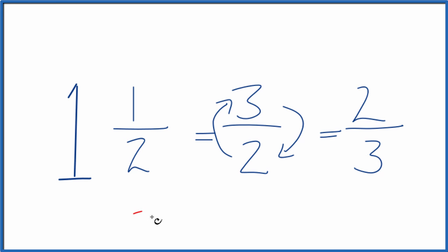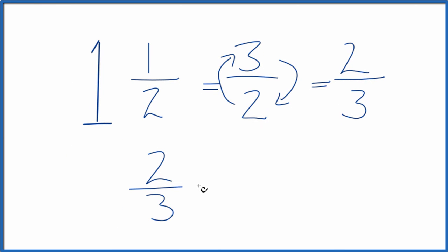And we can check our work. We could take 2 over 3 and multiply that, this is our reciprocal, by our original number, 3 over 2. That should equal 1 if we did this correctly.